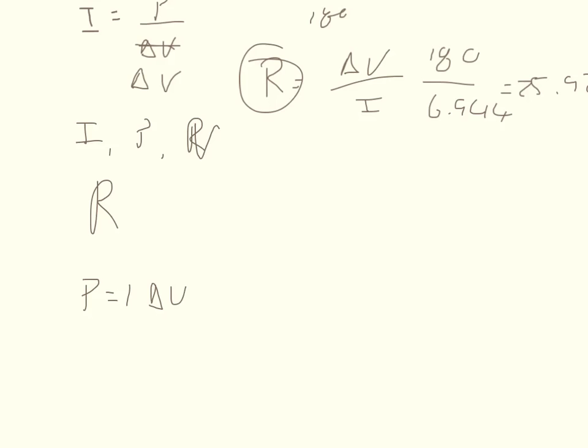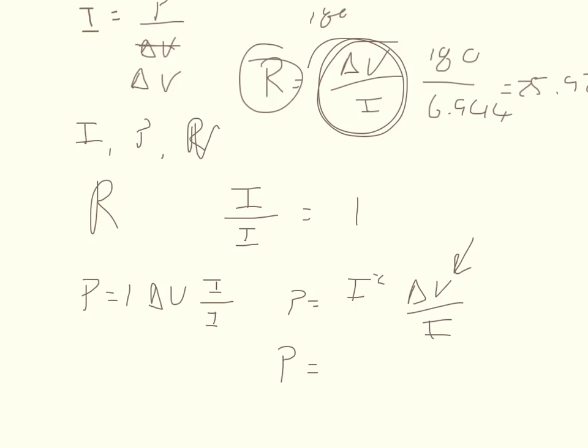If you start off with the definition for power, power is equal to I delta V, and then you can multiply this by I over I, which equals one, so it doesn't change the number. What I get is P equals I squared times delta V over I. We saw a minute ago that delta V over I is equal to the resistance.